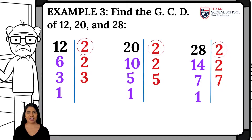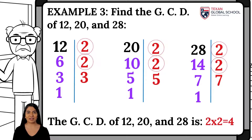As we can see, all numbers share the prime factor 2. However, the greatest common divisor is 4, since it is the largest integer that can divide all the numbers.